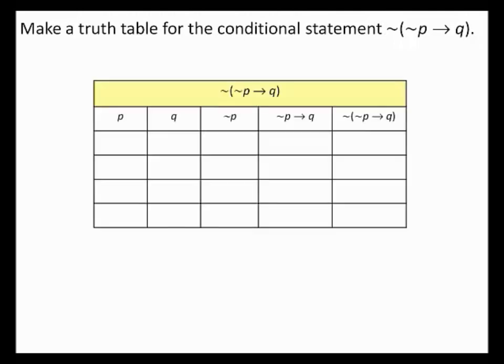Make a truth table for the conditional statement: the negation of (not P implies Q). Create a table with five columns: P, Q, not P, (not P implies Q), and the negation of (not P implies Q). In the first two columns, list all possible combinations of truth values for P and Q: both true; P true and Q false; P false and Q true; both false.